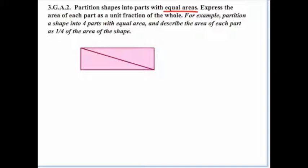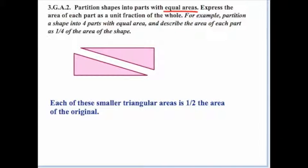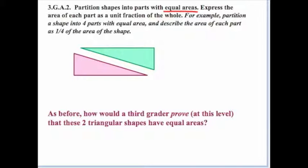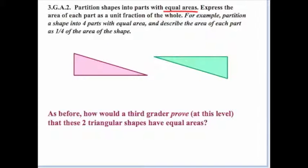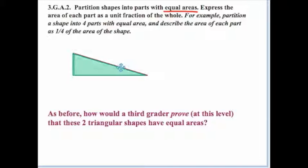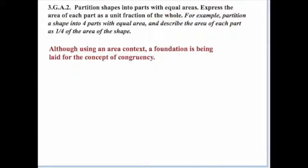Now let's say we have a rectangle divided by a diagonal into two equal areas. How would a third grader prove that these two triangular shapes have the same area? Change the color of one so you can tell them apart, then slide one over, rotate it, and slide it again — one fits exactly over the other, so it's obvious they have the same area because they're exactly the same shape and size. Although we're using an area context, we're really laying a foundation for the concept of congruency.